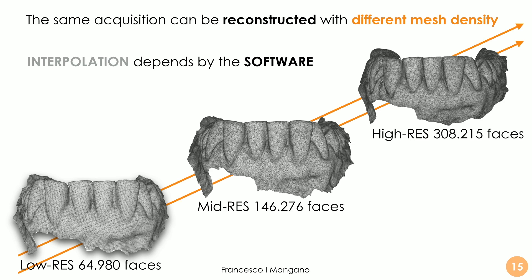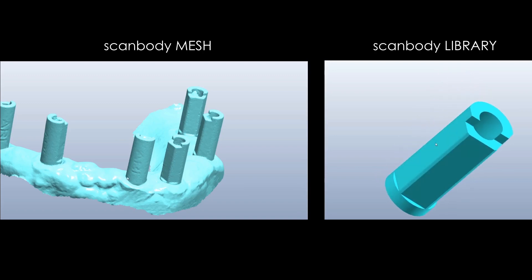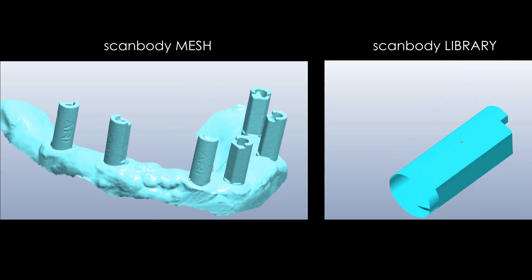We can choose a low resolution reconstruction with approximately 70,000 faces, a mid-resolution with 150,000 faces, or a high resolution with 300,000 faces. With high resolution, the reconstruction clearly looks better and more detailed, and it is easier for the dental technician to visualize the structures — but it doesn't mean it is more accurate; it is still an approximation.